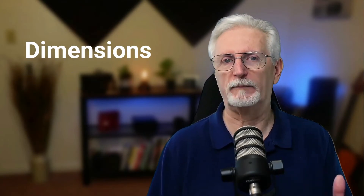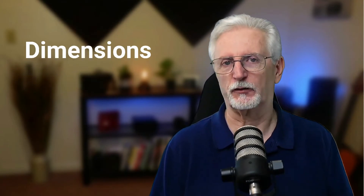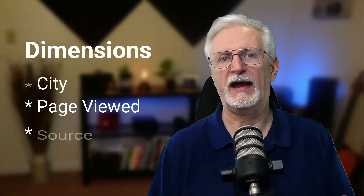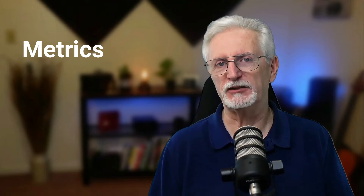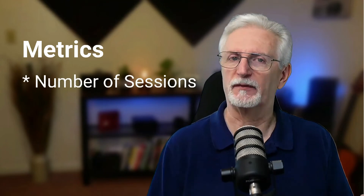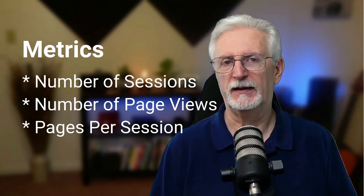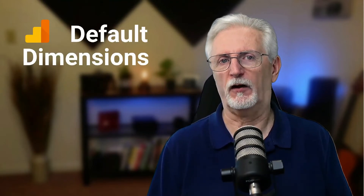Every Google Analytics report contains two types of data: dimensions and metrics. Dimensions are the attributes of your website's visitors — for example, what city they're from, what page they viewed, and what sources they came from. Metrics are the measurements of what they're doing on your site, including things like the number of sessions, page views, and pages per session. Google Analytics tracks predefined dimensions by default.